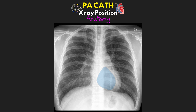Coming out from the right ventricle, we have the pulmonary artery. The main pulmonary artery is short and large, and it quickly divides into the right and left pulmonary arteries. The left pulmonary artery travels up and over the left main stem, while the right pulmonary artery has a pretty horizontal path. We also have the first branches off both — the right upper lobe pulmonary artery and the left upper lobe pulmonary artery — and they continue as the right and left interlobar pulmonary arteries.